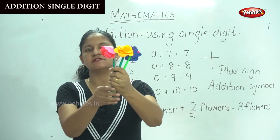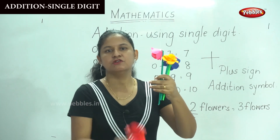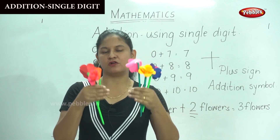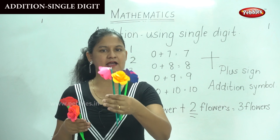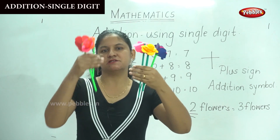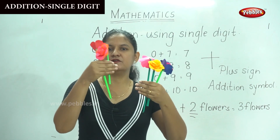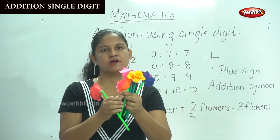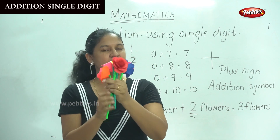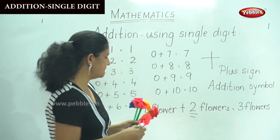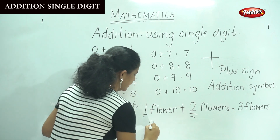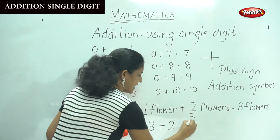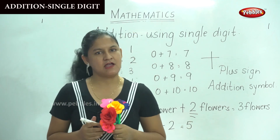I have 3 flowers in my left hand and 2 flowers in my right. So I want to know the total number of all the flowers I have. So in that case 3 plus 2 — counting 3, 4, 5 — gives us 5 flowers. So 3 plus 2 is 5.